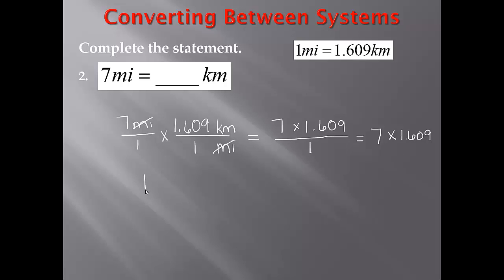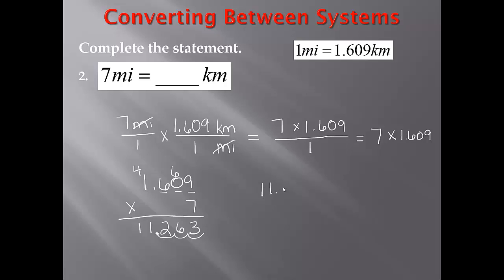Now I'll go ahead and multiply this out: 1 and 609 thousandths times 7. 7 times 9 is 63. 7 times 0 is 0, plus 6 is 6. 7 times 6 is 42. 7 times 1 is 7, plus 4 is 11. Now I need to place my decimal point. I have the 6, 0, and 9 after my decimal, or a total of 3 places, so I'll move my decimal 3 places to the left, giving me 11.263, or 11 and 263 thousandths kilometers.